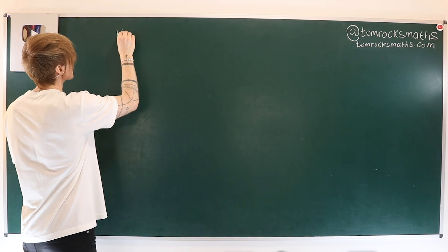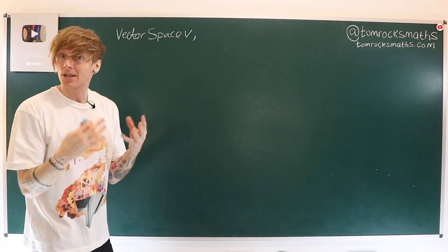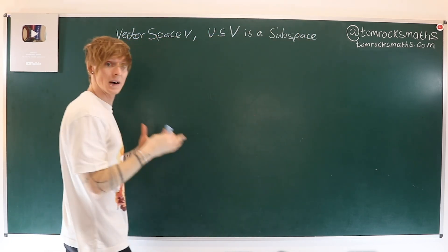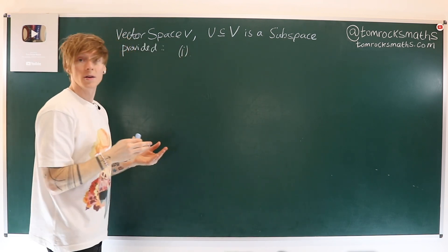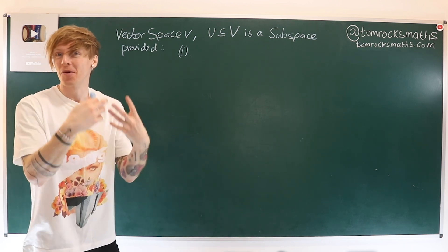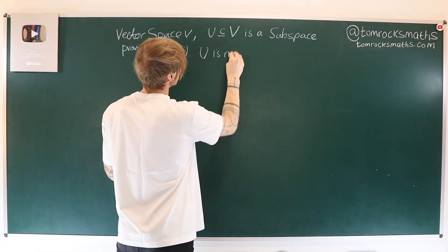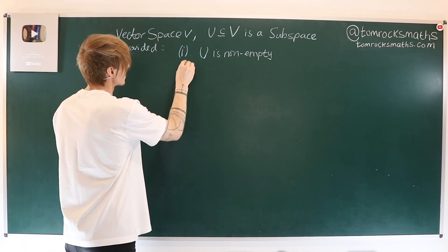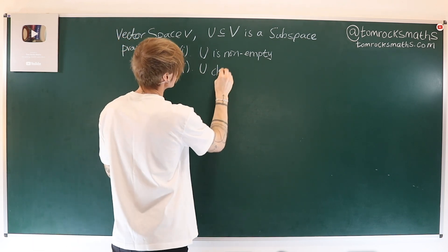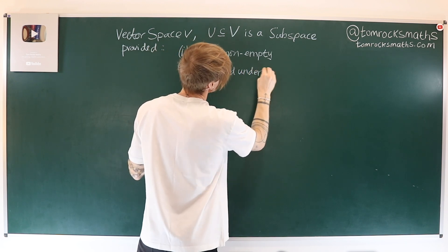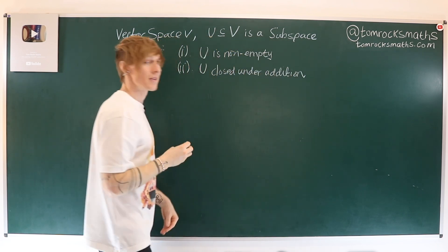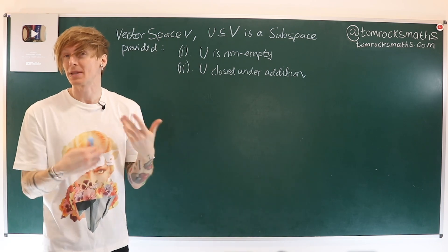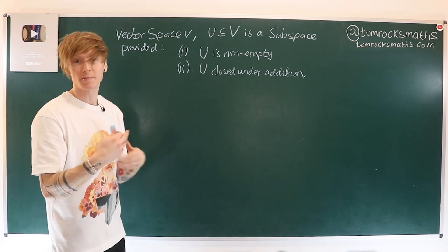Suppose we have a vector space V and a set U contained in V. U is a subspace provided the following are satisfied. First, U must be non-empty — there has to be something within our subspace. The second property is that U must be closed under addition: if we have two elements in U and we add them together, we stay inside U.